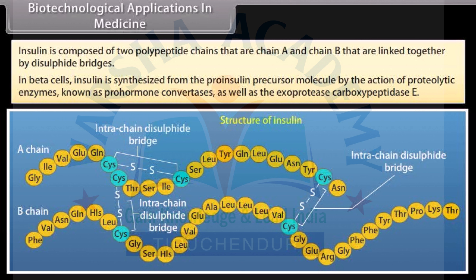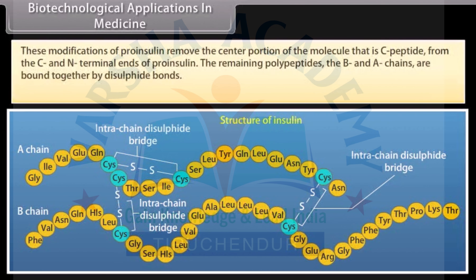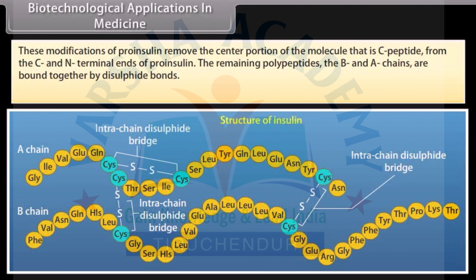These modifications of proinsulin, along with exoprotease carboxypeptidase E, remove the center portion of the molecule, called the C peptide, from the C and N terminal ends of proinsulin. The remaining polypeptides, the B and A chains, are bound together by disulfide bonds. The C peptide is not present in the mature insulin.